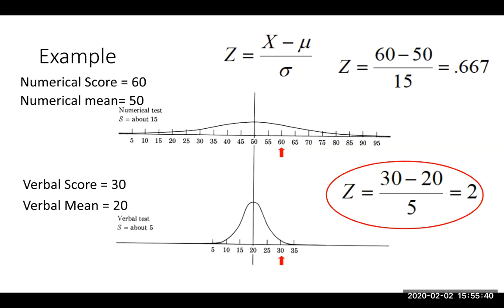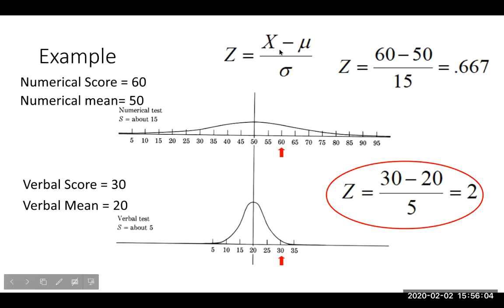One common error is mixing up X and mu — putting mu first, so mu minus X — which gives you the exact opposite orientation. The way I help students remember is: think of 'four score and seven years ago' — your score minus the mean. It's a bit goofy, but hopefully it helps you remember to put your score first, then subtract the mean.